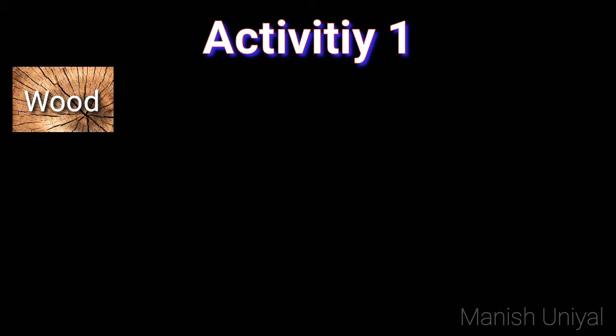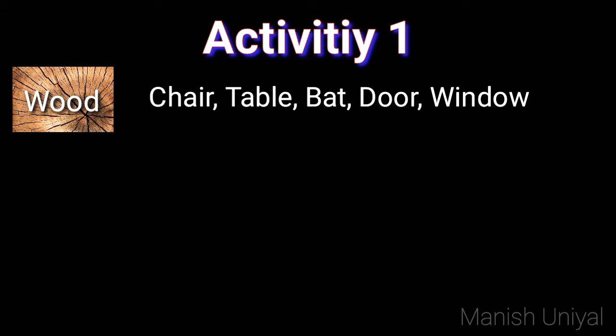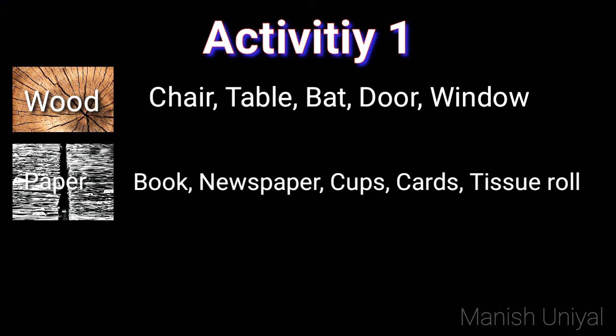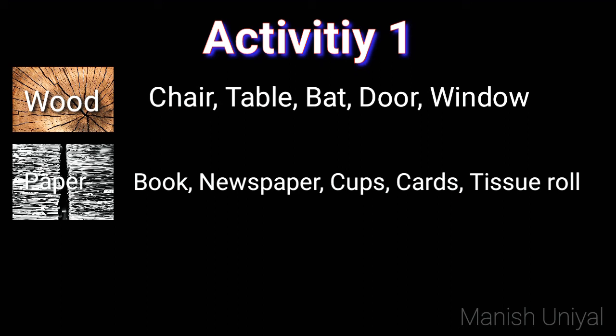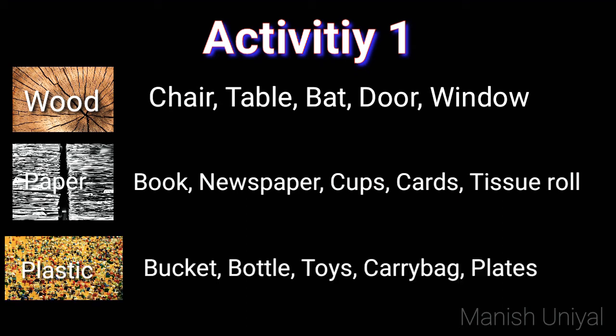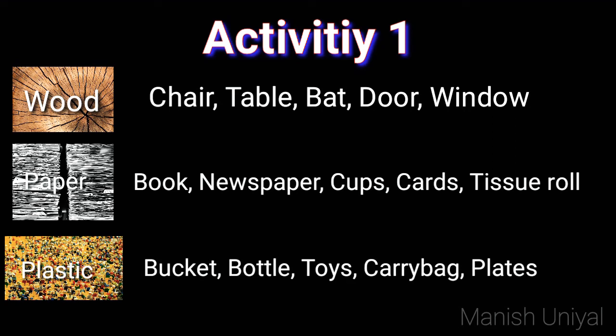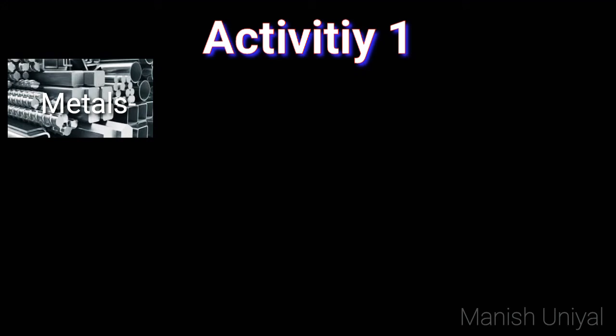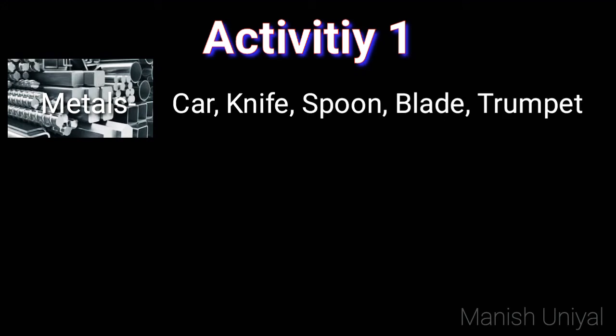Activity 1: List 5 substances made using each of the following materials. Wood: chair, table, bed, door, window. Paper: book, newspaper, cups, cards, tissue rolls. Plastic: bucket, bottle, toys, carry bag, plates. Metals: car, knife, spoon, blade, trumpet.